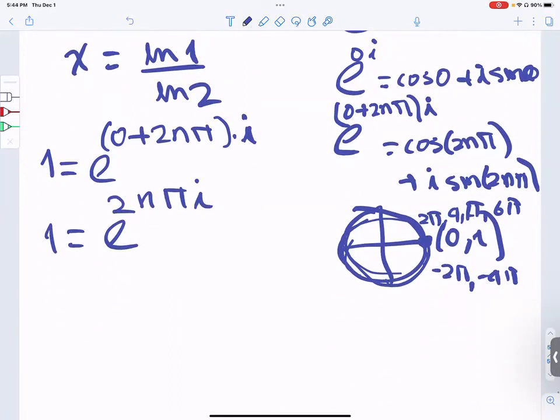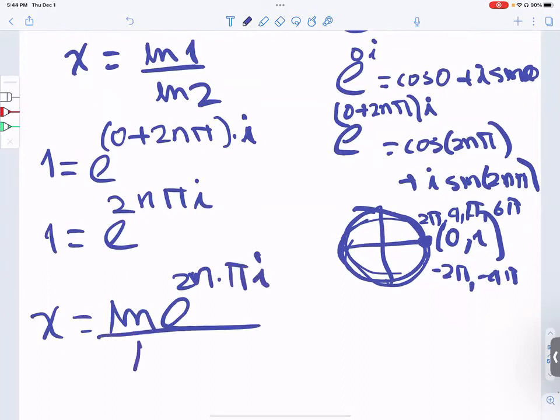And now x equals ln of 1, but instead of writing 1, I will write e to the 2n pi i, divided by ln of 2.